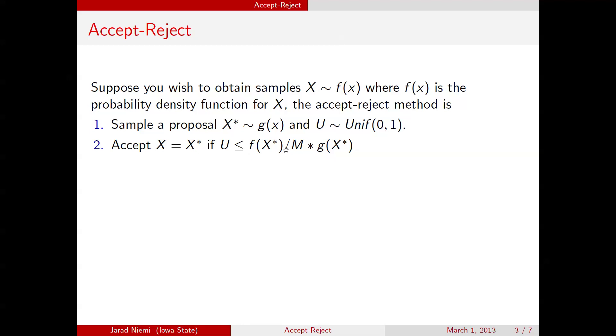Now we calculate this quantity, f of x star divided by m times g of x star. And we ask the question, is our uniform less than that quantity? So we're going to accept with this probability right here.